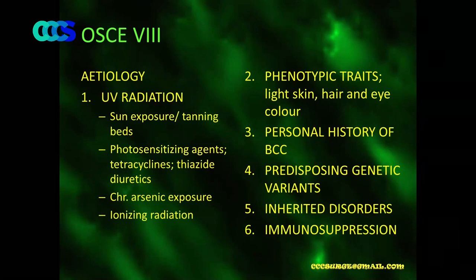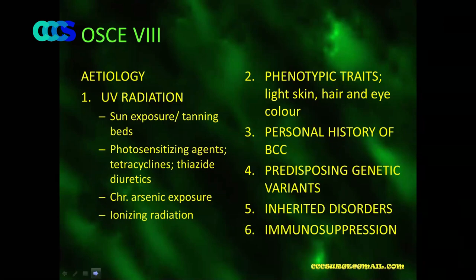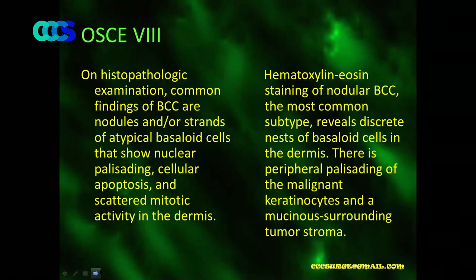Patients with a personal history of basal cell carcinoma are more prone to it, and it usually presents at a younger age. There are genetic predisposing variants. Inherited disorders also play a role, as does immunosuppression. On histological examination, common findings of BCC are nodules or strands of atypical basaloid cells showing nuclear palisading.